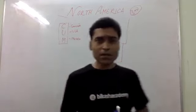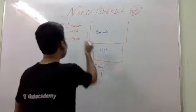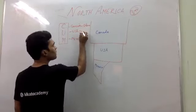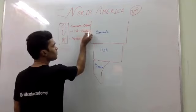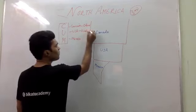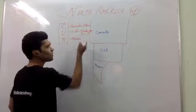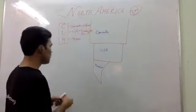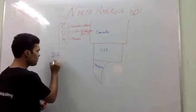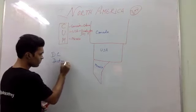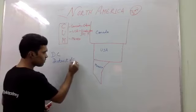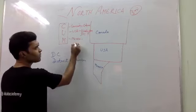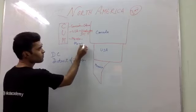First of all, we have to understand the capitals. Canada's capital is Ottawa. USA's capital is Washington D.C. — D.C. means District of Columbia. And Mexico's capital is Mexico City.